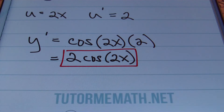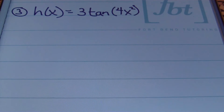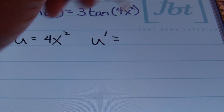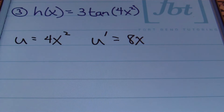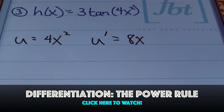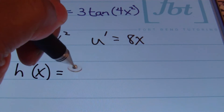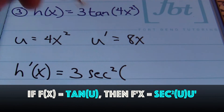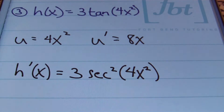In problem three we have h of x equals 3 times tan of 4x squared. We recognize that u equals 4x squared, and the derivative of u — using the power rule — is 8x. The derivative h prime of x equals 3 times the derivative of tan, which is secant squared of u (4x squared), times the derivative of u, which is 8x.